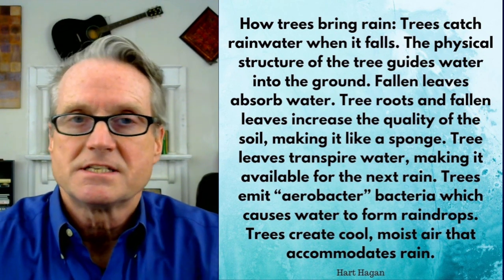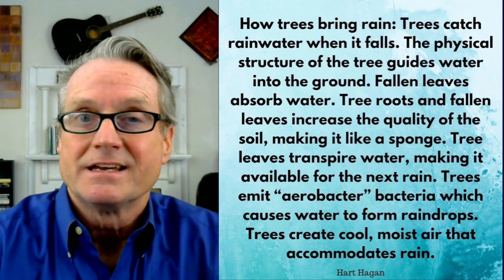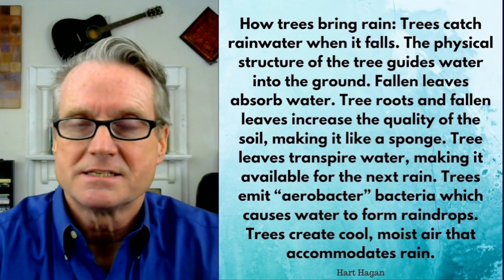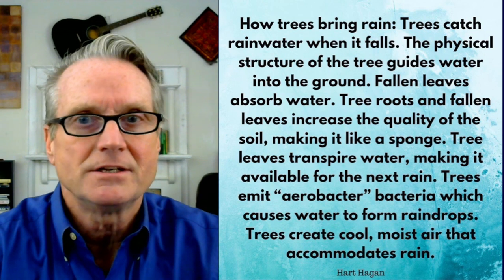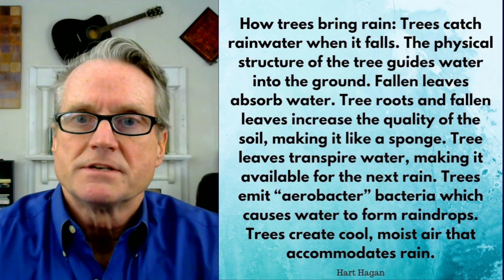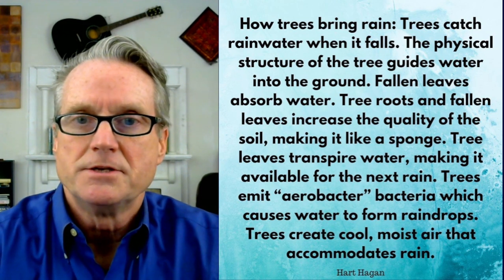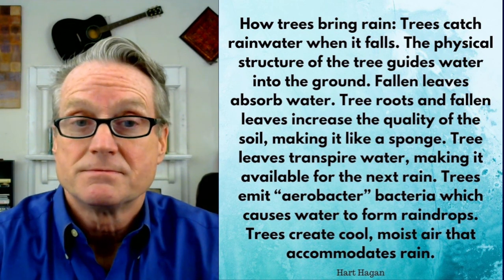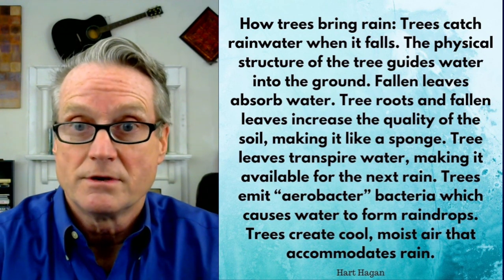The soil that does not dry out is soil that is not degrading. When soil dries out, it degrades, it oxidizes, it releases carbon, and it compacts — not good. So tree roots and fallen leaves increase the quality of the soil, making it like a sponge. Good quality soil is like a sponge, and tree roots and tree leaves increase that quality.